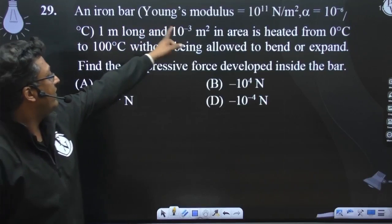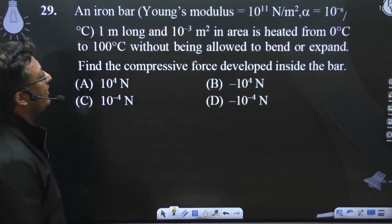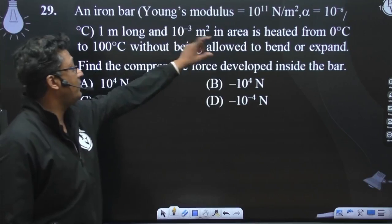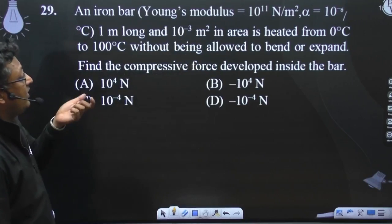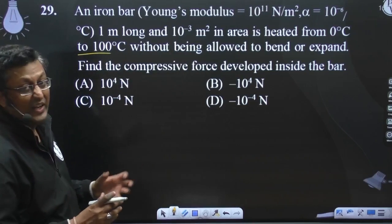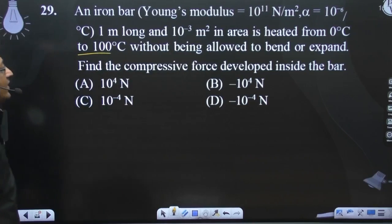An iron bar with Young's modulus 10 to the power 11 newton per meter square, alpha is 10 to the power minus 6 per degree Celsius, 1 meter is the length, area of cross section is 10 to the power minus 3 meter square, is heated from 0 to 100 degree Celsius without being allowed to bend or expand. Find the compressive force developed inside the bar.